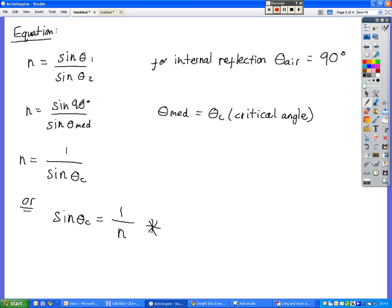So because sine 90 is equal to 1 and sine theta medium is equal to the critical angle, sine of the critical angle, then we can get our first equation here. And we can rearrange that for the critical angle to give us 1 over n. And that's probably the most used equation for critical angle.